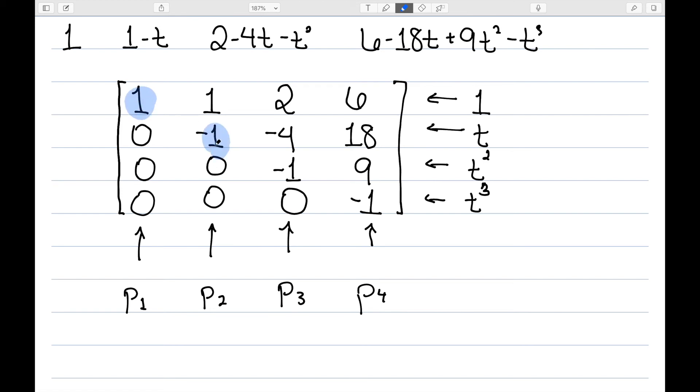And you can see this is already in row echelon form. And I have a pivot in every row and every column. So this would form a basis since they are all linearly independent and it does span.